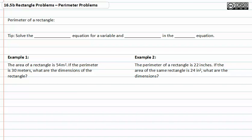In this video we're going to be covering perimeter problems. The perimeter of a rectangle is defined in mathematical terms as two times the length plus two times the width equals the perimeter.